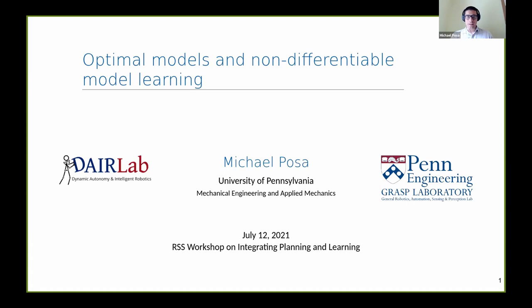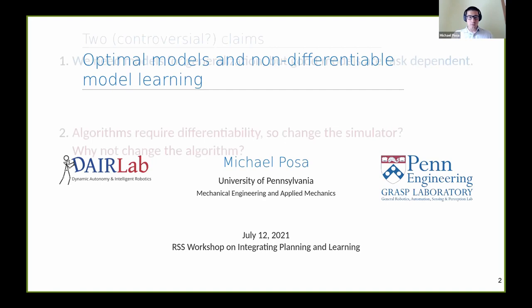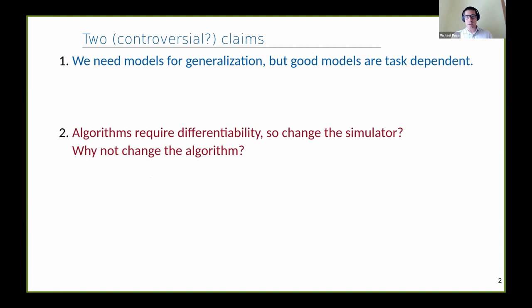Thank you very much for the introduction. Very excited to be here. We were asked to be provocative if possible. I'm not sure how controversial these are going to be, but I'll try. First, this builds off discussion from the first session. I would say we do need models for generalization. If I want to adapt to a wide variety of tasks, potentially swapping sensors in and out, swapping robot components in and out. But I'd also argue that good models are somehow task-dependent.